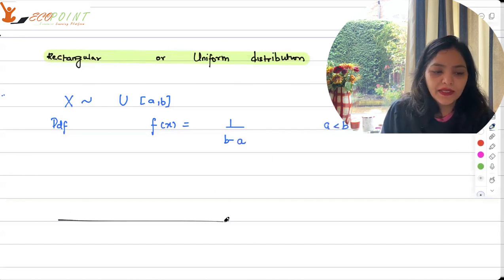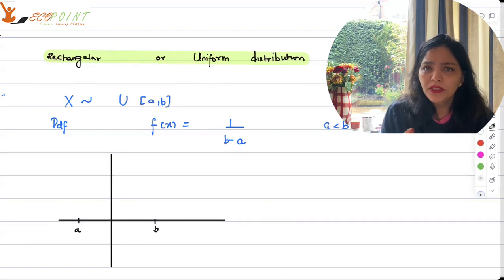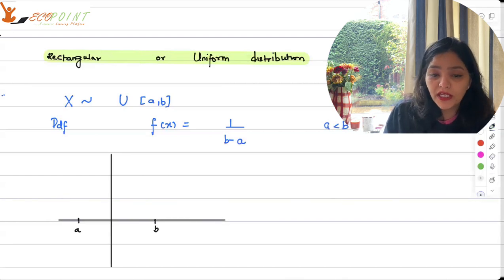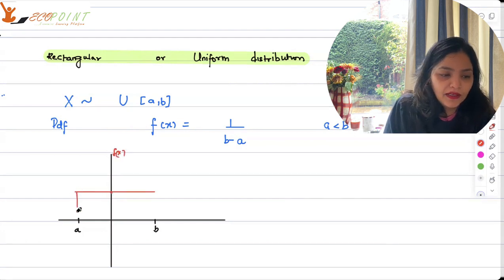If say this is your x-axis and this is your y-axis, suppose a is here, b is here. We are saying that there's a uniform probability. The word uniform stands for it's going to be the same. It will not change. So it is the same probability throughout of x between a and b. This is your fx, the probability. So whatever is fx, it's going to be the same between a and b.